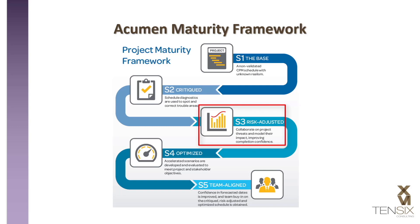S3, risk adjusted. The uncertainty of duration and cost estimates are considered. Risk events including both threats and opportunities are identified. A risk event can be positive — something good that may happen to your schedule that decreases the duration and/or cost. The exit from this stage is a realistic schedule outcome.